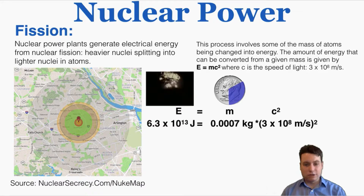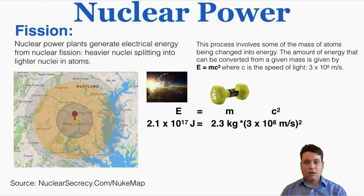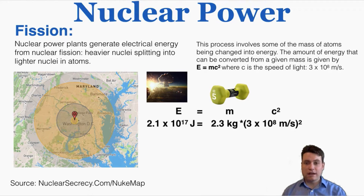Just that amount of mass contained enough energy to create the explosion shown in the animation, with an area of impact equal to the area shown on the map. We can compare this to the largest nuclear bomb ever created — even that largest bomb, which if dropped would consume everything from Baltimore to Fredericksburg, was created from a mass of just 2.3 kilograms. Using E equals mc squared, 2.3 kilograms times the speed of light squared gives 2.1 times 10 to the 17th joules — a stunning amount of energy. So if we can harness that energy, we have a huge and abundant amount available to us.